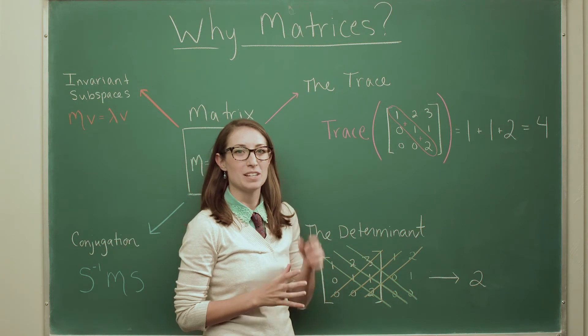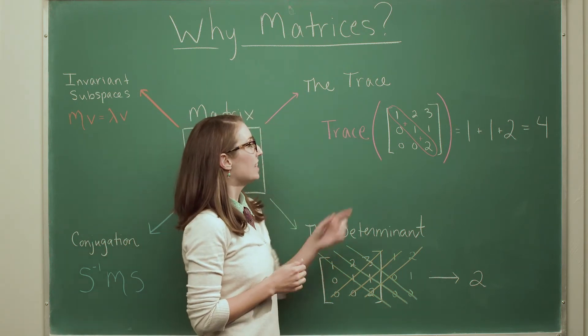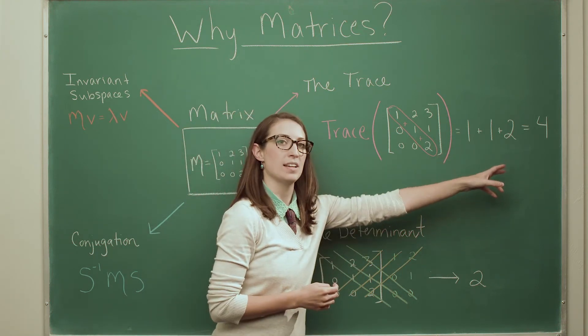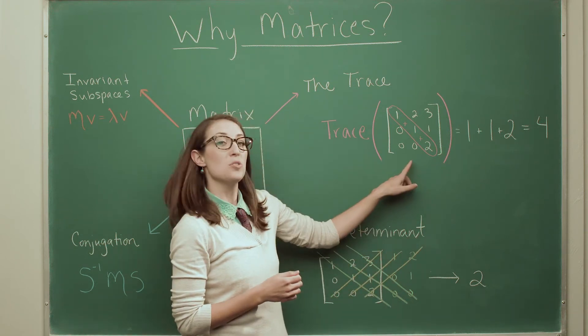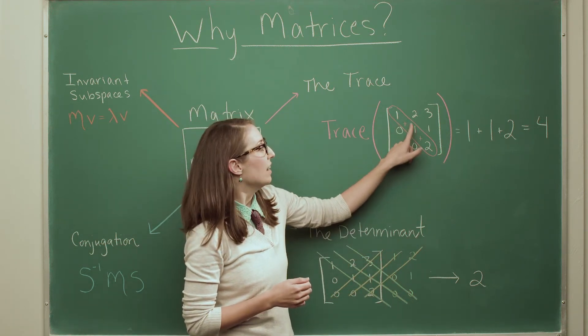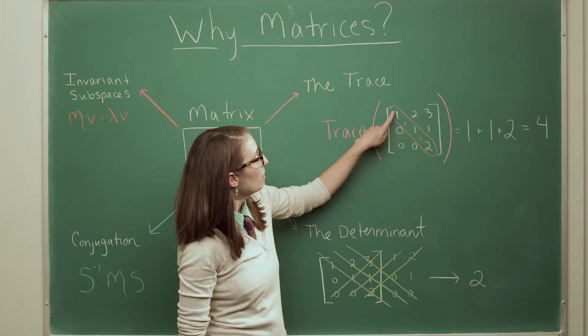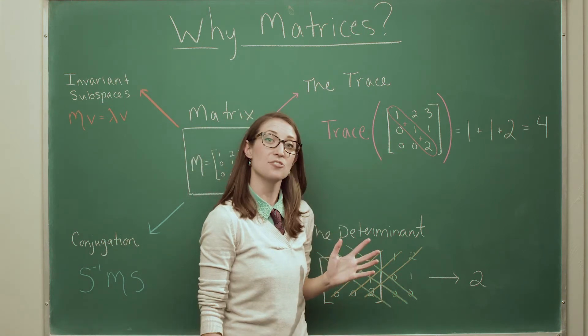The other two operations that were depicted are a little easier to understand. The trace, what it does is it's an operation that takes in a matrix and outputs a number. And this number is measuring a property about your matrix. The way that you compute it is you add up the entries on the diagonal of your matrix. So here I'm going to go one plus one plus two is four. And that's the trace of my matrix.